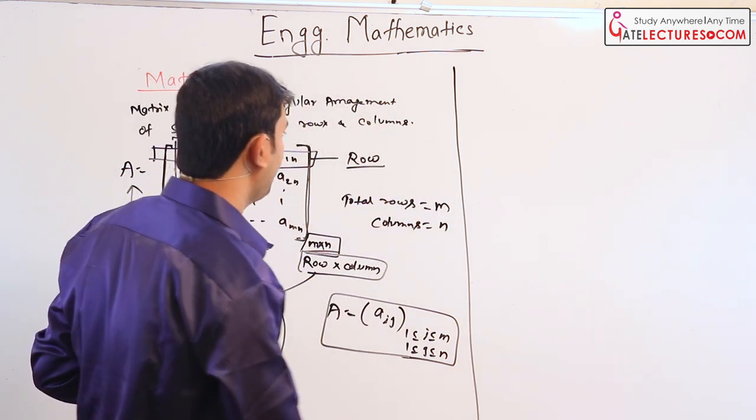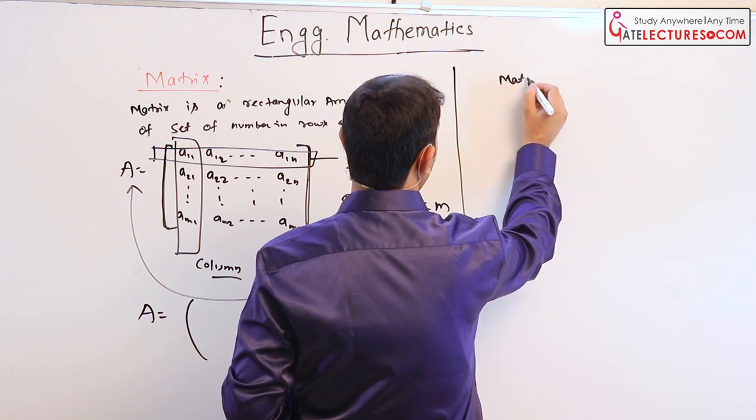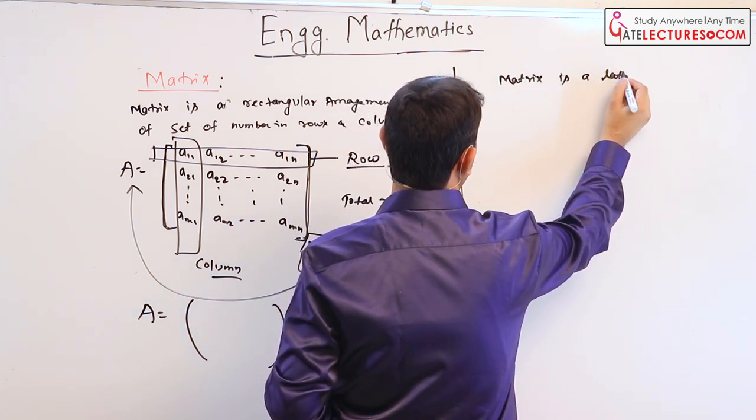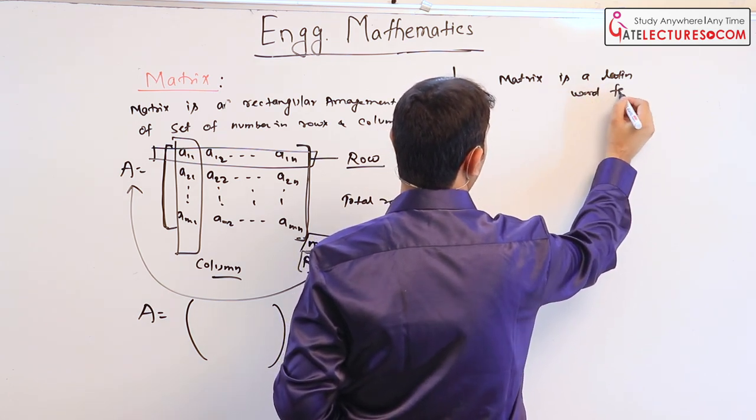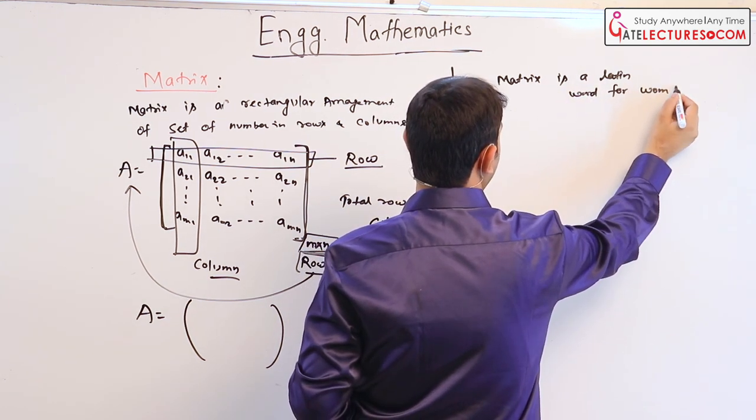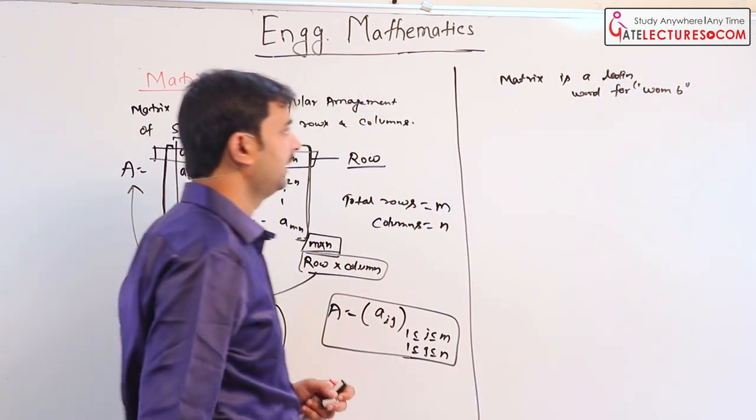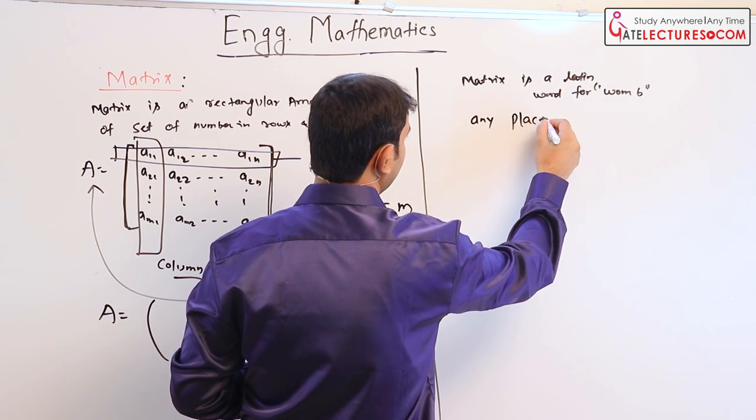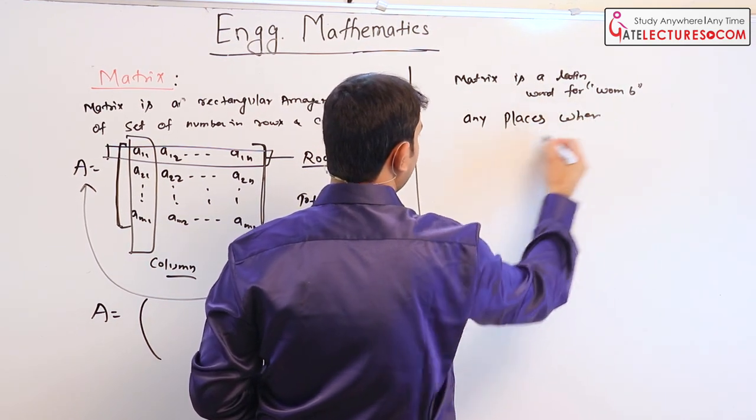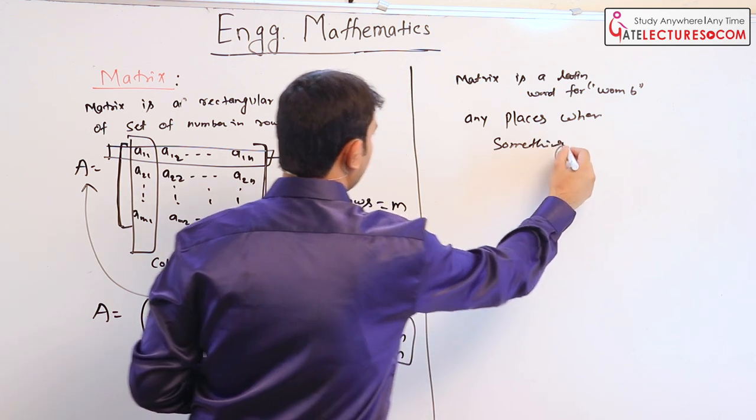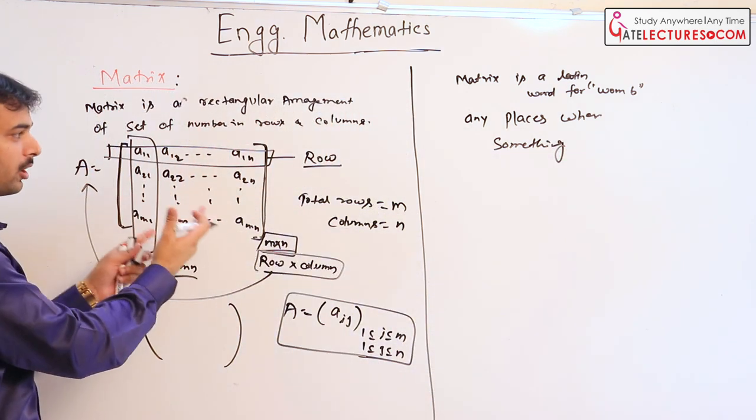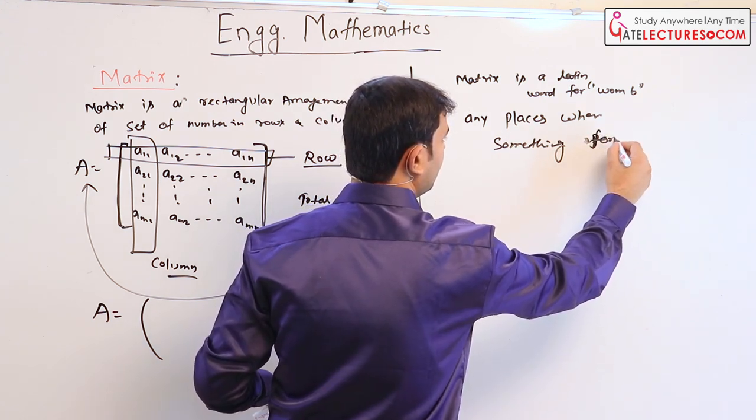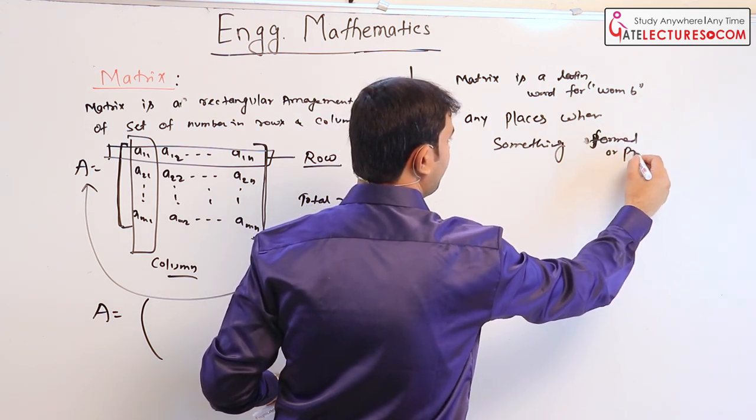If you go back, firstly, matrix is a Latin word for that means any place where something is formed or produced.